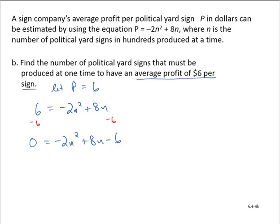Now I'm going to start factoring, focusing on that trinomial. Notice that we have a common factor of 2. But I want the lead coefficient after factoring to be positive, so I'm going to factor out a negative 2. So 0 is equal to negative 2 times n squared minus 4n plus 3.